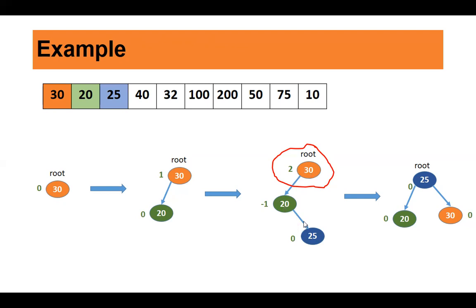As per the rotations discussed in the previous lecture, it needs a double rotation. After carrying out the rotation, 25 becomes the new root, 20 is the left child, and 30 is the right child. Remember, even after carrying out the rotation, the tree must maintain the binary search tree property. Now calculate the balance factor again: 20 and 30 are leaf nodes with balance factor 0, and 25 also has balance factor 0.